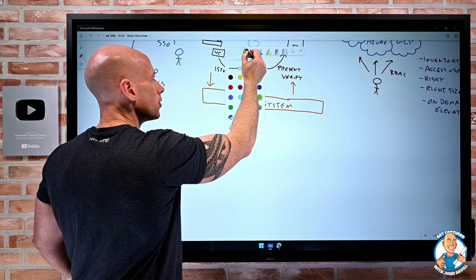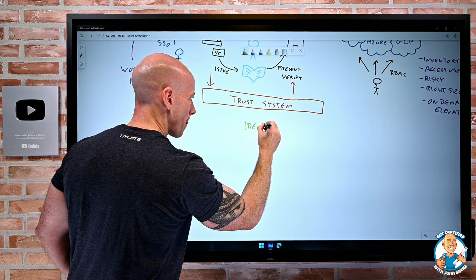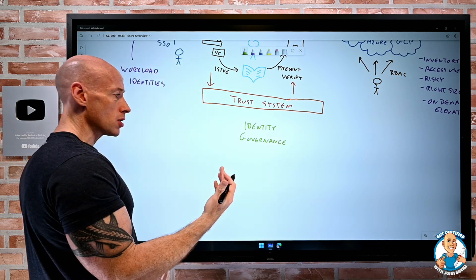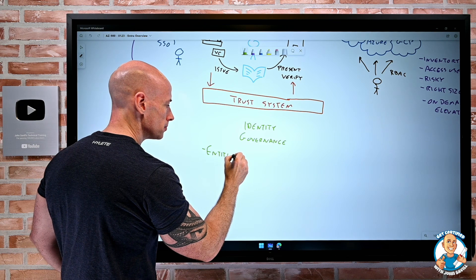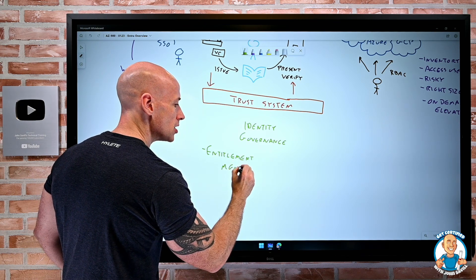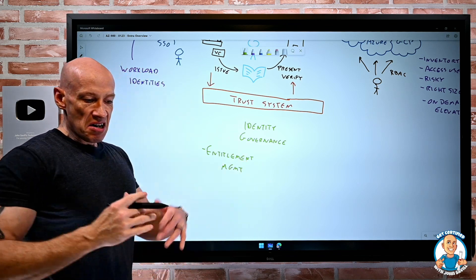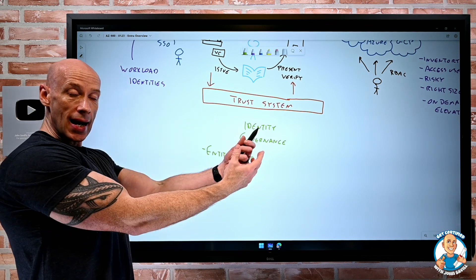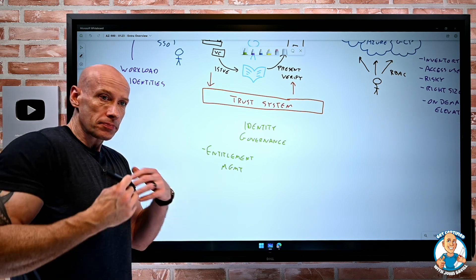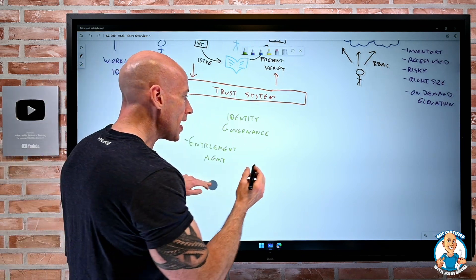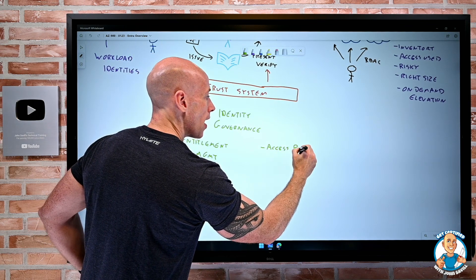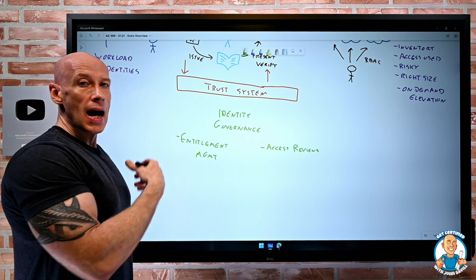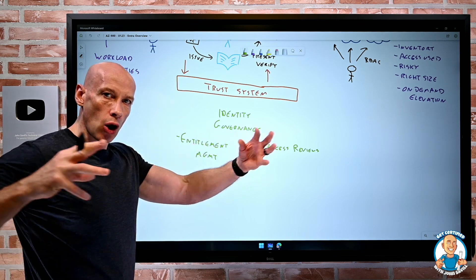And then there's a whole set of other technologies that we think of around identity governance. Now, many of these we've had for a long time. We think about entitlement management. This is where I can create access packages that comprise of group memberships, application assignments, SharePoint sites. And then I can configure certain groups who are allowed to request the access package. Maybe it has to go through some kind of approval. Then they get that for some time-boxed time. We have concepts like access reviews where I can review or delegate or users can self-review. Do you still need this group membership? Do you still need this application assignment? Do you still need this role to help, again, stop that bloating over time of permissions?